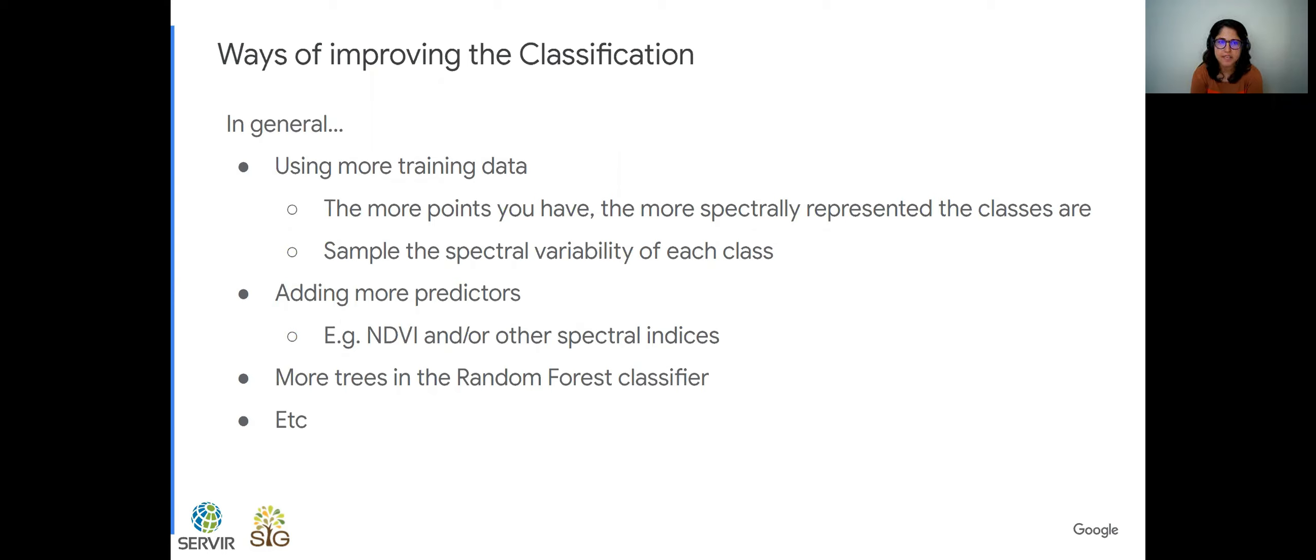So as mentioned, in general, using more training data improves your classification. Next week we're going to look into inspecting which classes are not doing so well with the classification. And we can create more training points targeted to those classes to improve the classification. For example, another thing I mentioned a lot, sampling the spectral variability of each class is also good practice.